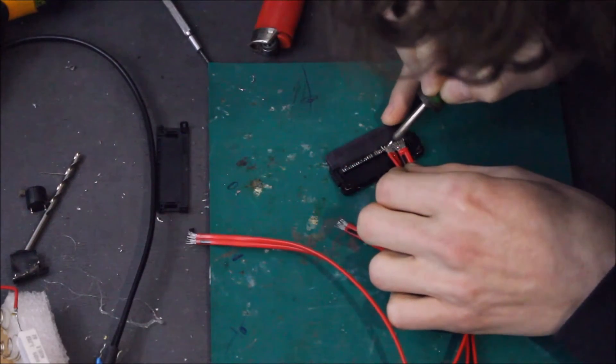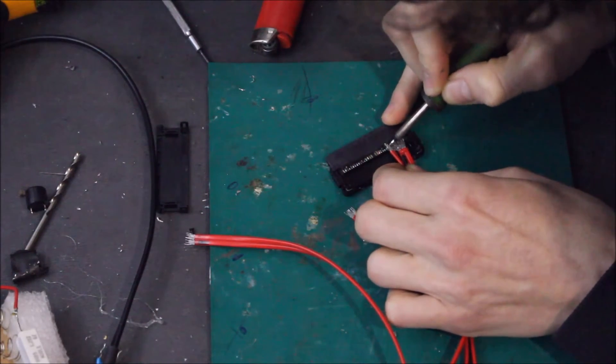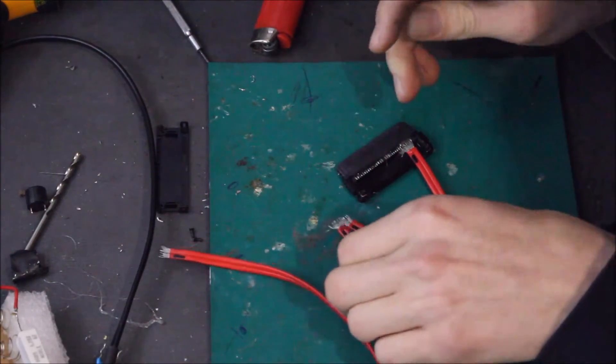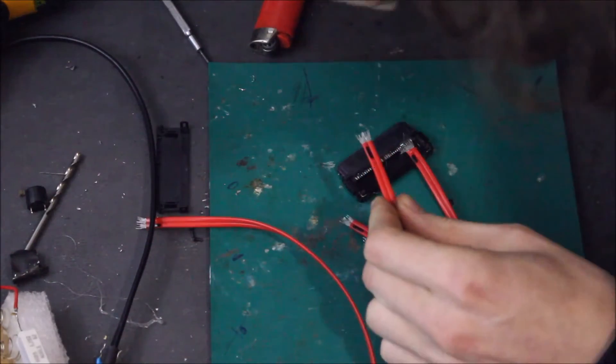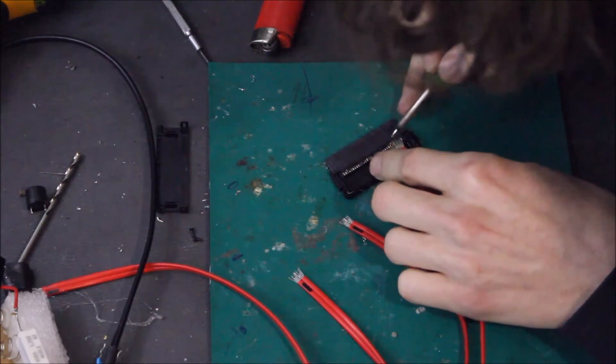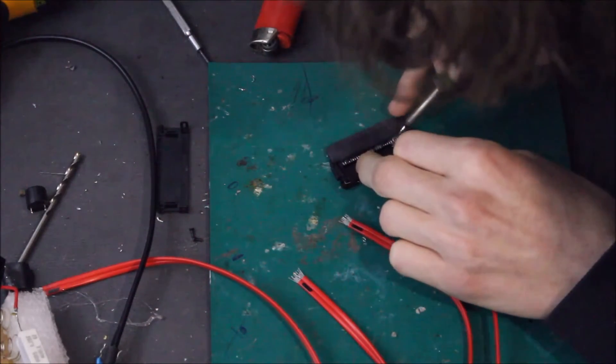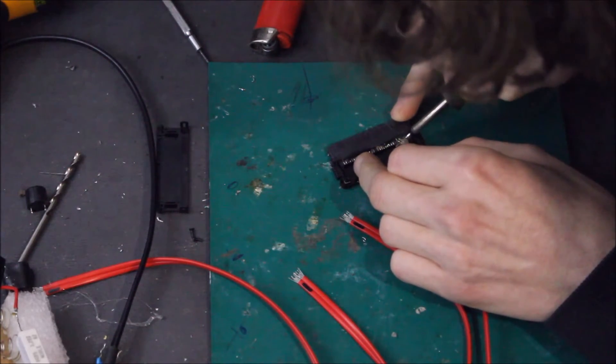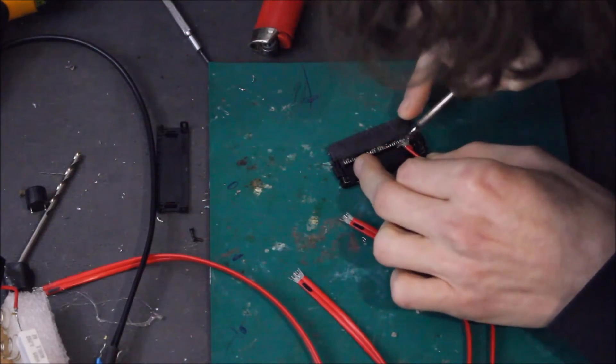You can see it's actually really quite quick and simple. Just go through, heat them up one by one, and then pull the, squeeze the end, and pull the wet heat hot glue off it. Just makes it a bit easier because you have to get it off eventually.